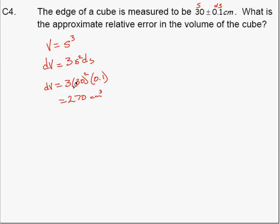That's the absolute error, or approximate absolute error. We want the approximate relative error. To do that we need to compare the error to the actual volume. The actual volume we calculate by plugging 30 into the volume equation, finding that the volume is 27,000 cubic centimeters.